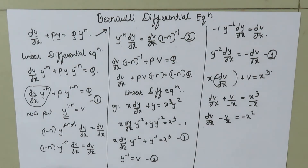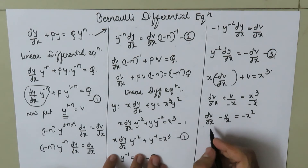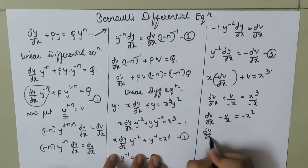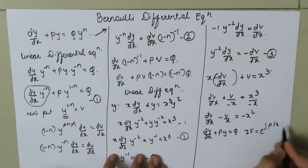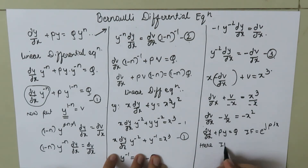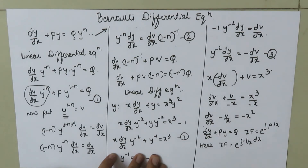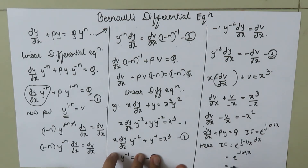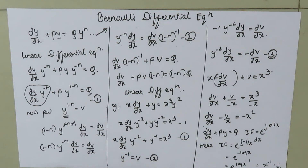Comparing with the standard linear differential equation dv/dx plus p times v equals q, the integrating factor is e to the power of the integral of p dx. Here p equals negative 1 over x, so the integrating factor is e to the power of the integral of negative 1 over x dx, which equals e to the power negative log x, which equals x to the power negative 1, or 1 over x.